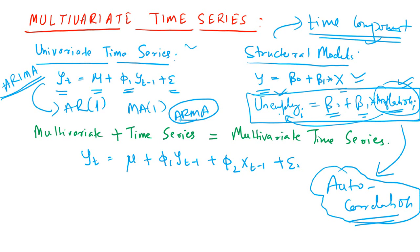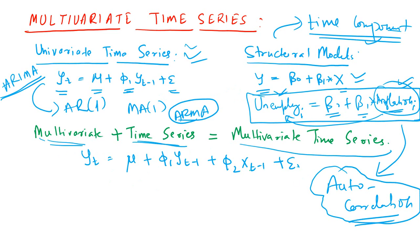If only the time-varying pattern is of interest, one goes for the univariate time series models. The multivariate time series model combines these two things. Multivariate time series models include the lags of the same time series, and they also include the lags of an independent variable or a factor. The specification includes both multiple variables and a time series component, and hence this class of models is known as multivariate time series models.